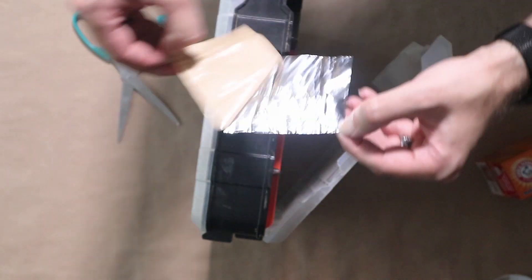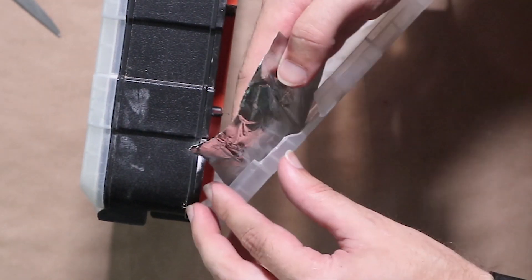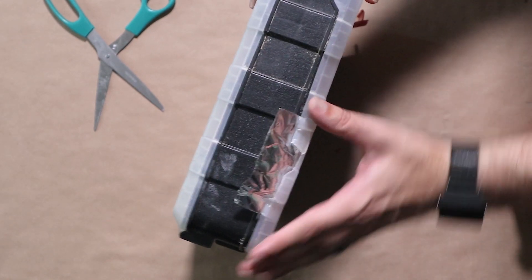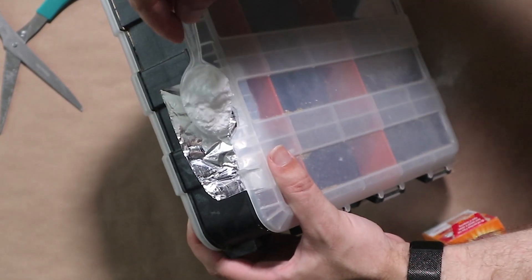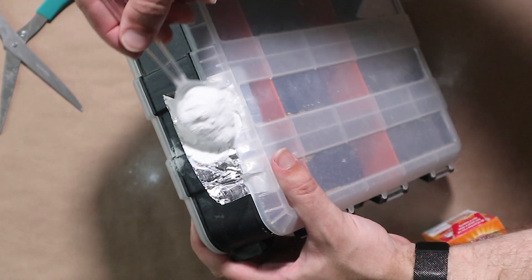My next step is putting some foil tape on one side of the lid. This will contort to the shape of the lid. And then I can start sprinkling some baking soda onto it filling out that void.